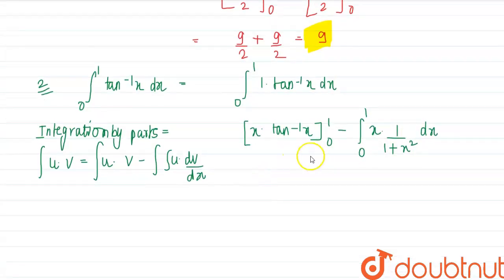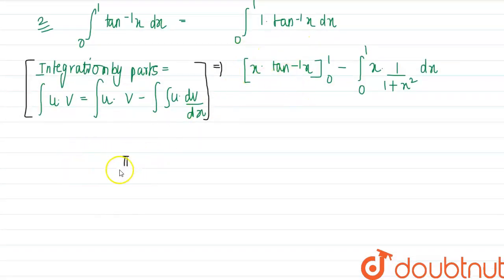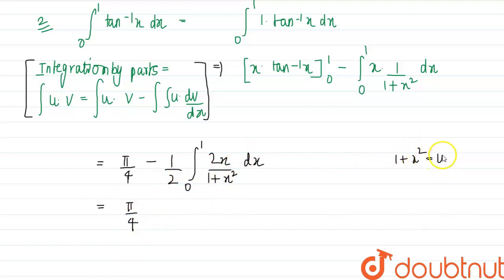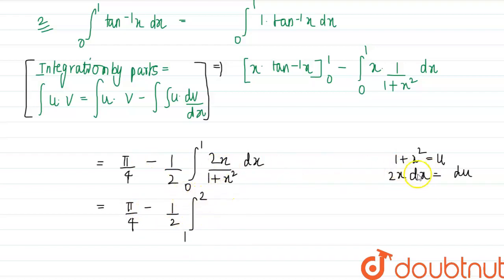Substituting the limits: 1 · tan⁻¹(1) = π/4, minus zero. For the remaining integral, we multiply and divide by 2, giving (1/2)∫₀¹ 2x/(1+x²) dx. Letting u = 1 + x², then du = 2x dx, and limits go from 1 to 2. This integral becomes (1/2)[ln u] from 1 to 2, which is (1/2) ln 2.